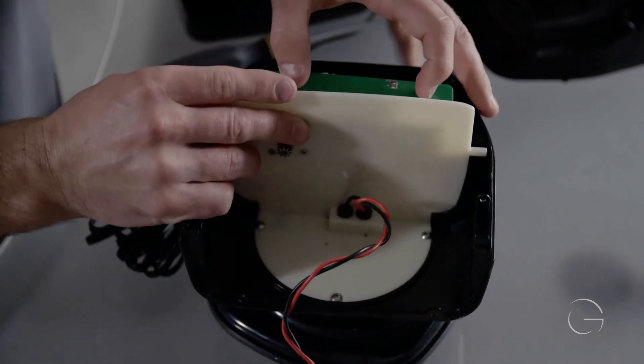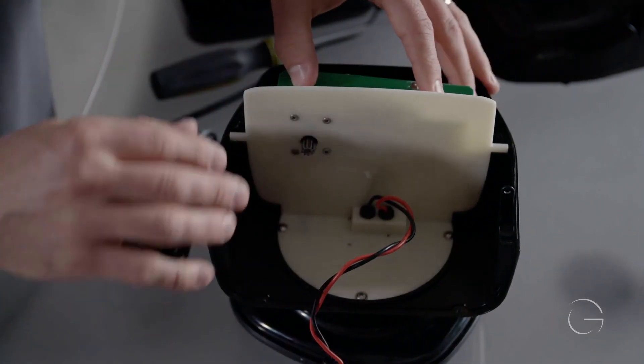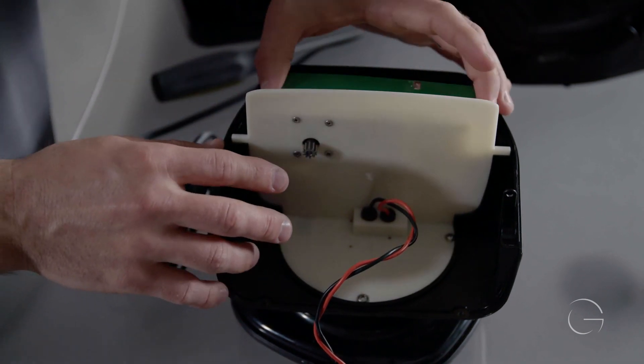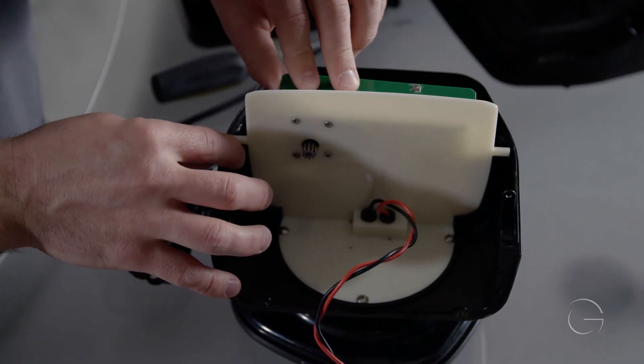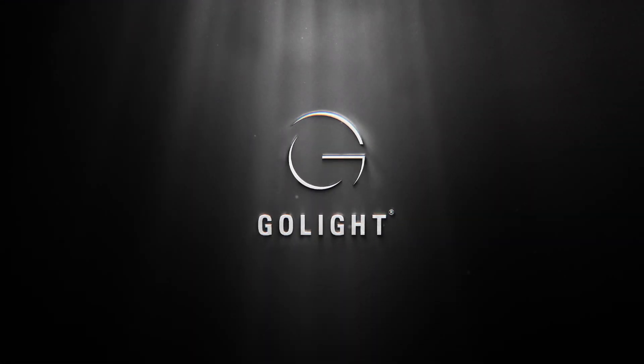Make sure that the receiver antenna is back in place. And then please refer back to the Go Light Radio Ray reassembly video.